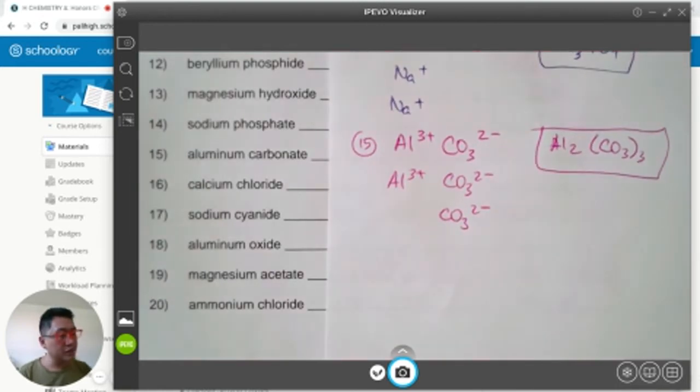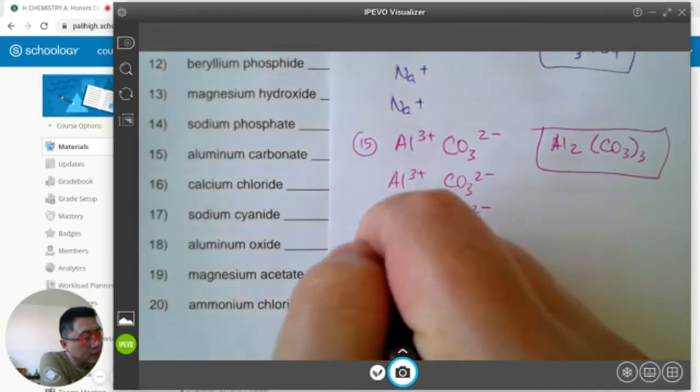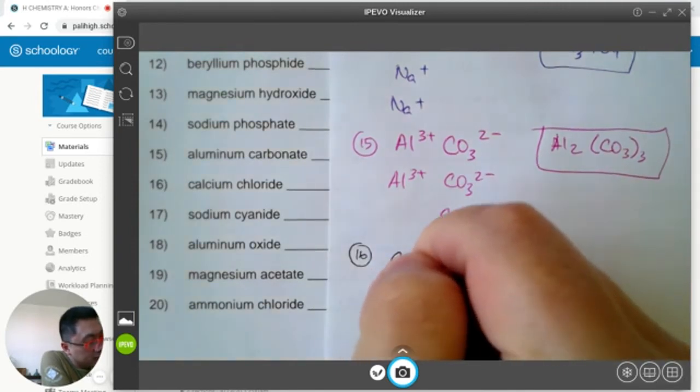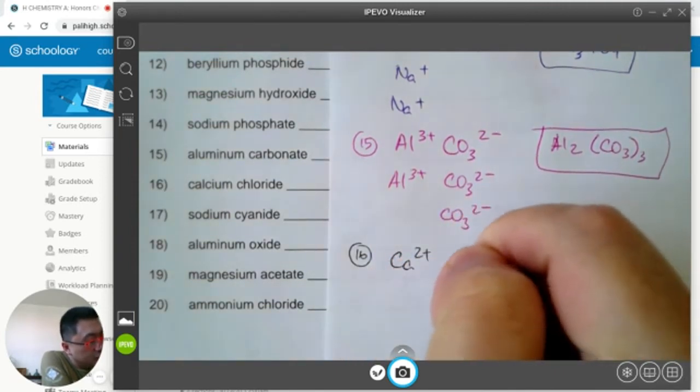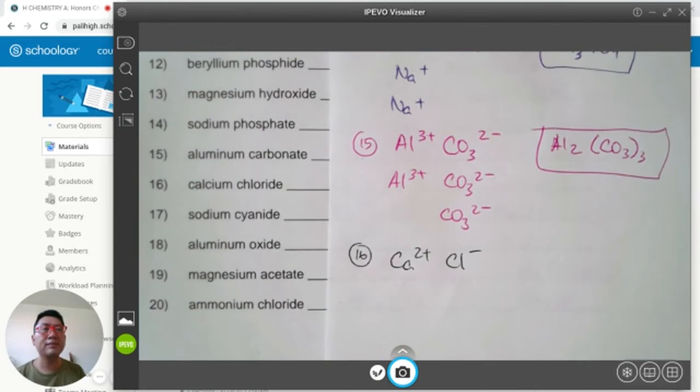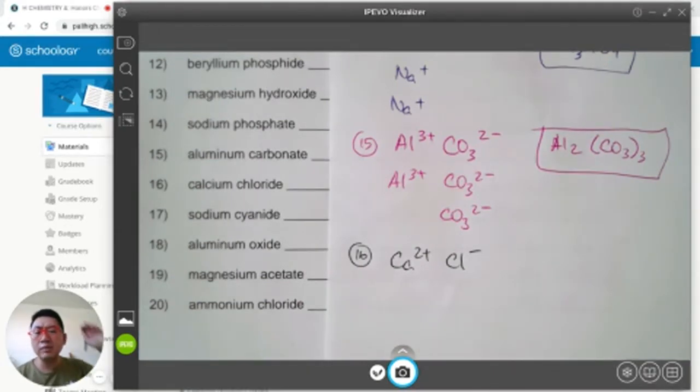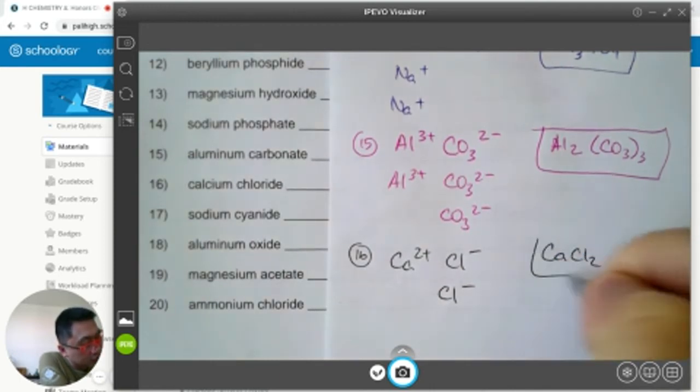Number 16, calcium chloride. Ca is calcium, plus 2. Chloride is negative 1. That doesn't add up to 0. What is the correct formula of calcium chloride? I need 2 chlorines. Positive 2, 2 negative 1s adds up to 0. CaCl2.